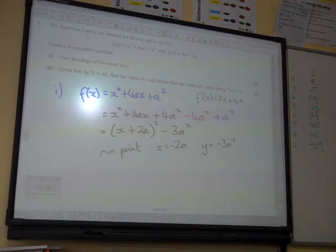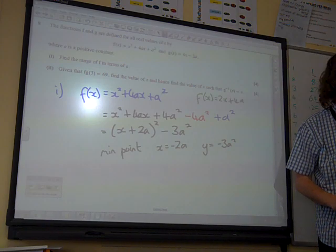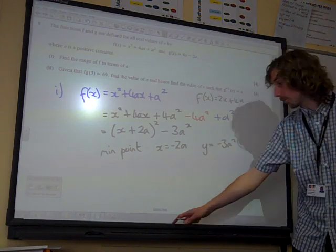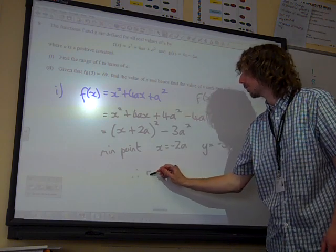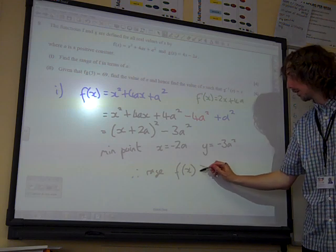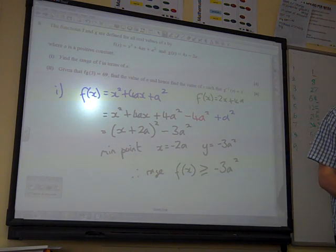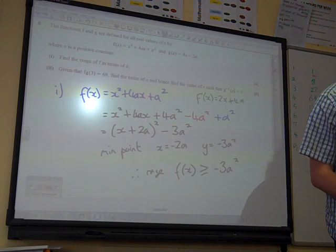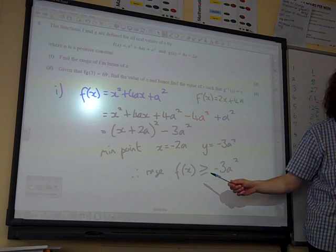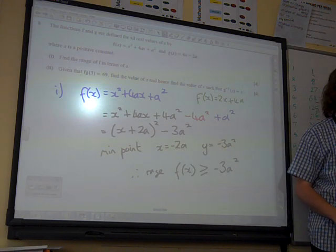We were supposed to be saying what the range was in terms of a, so what we've just discovered from this is that that's the minimum point of this curve. So the range is f of x is greater than or equal to minus 3a squared. Notice it's got to be greater than or equal to, because at the point where x is minus 2a, it is actually equal to minus 3a squared.